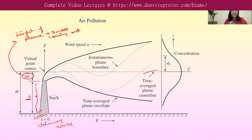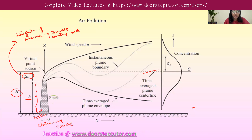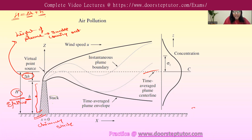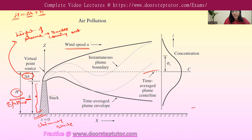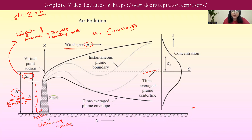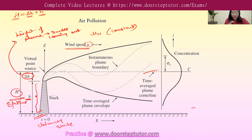Together, delta h and small h give us the effective height, represented by capital H. So the formula is: H = delta h + h, where delta h is the plume height and h is the stack height. Wind speed is represented by u or u_H, and we consider it constant for a given situation. The dotted line in the diagram indicates the point at which we calculate the concentration, and at that particular height, the concentration is at its maximum — this is also known as the instantaneous plume boundary.